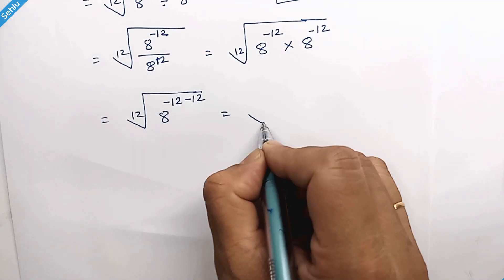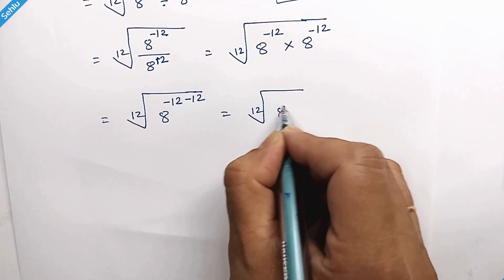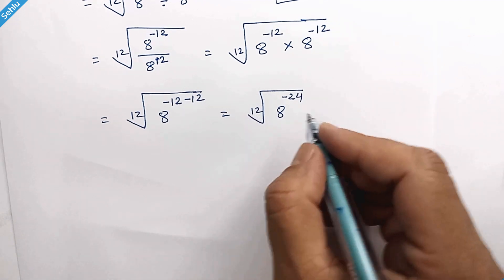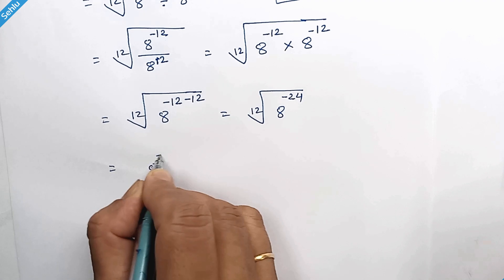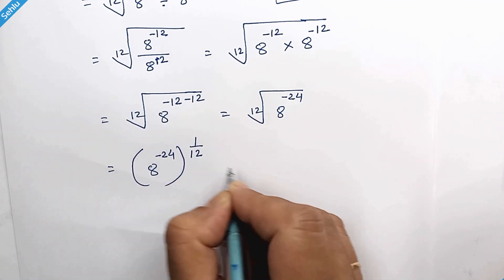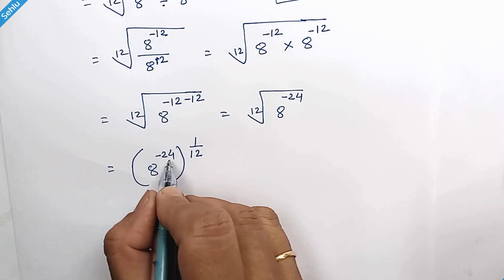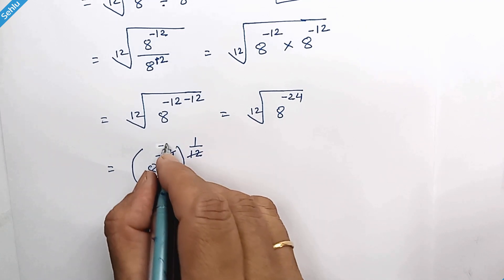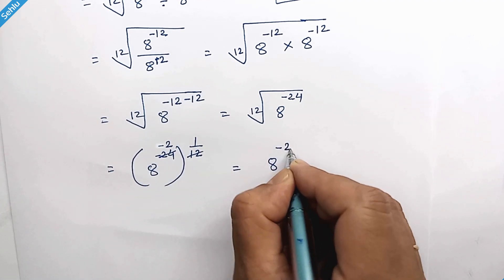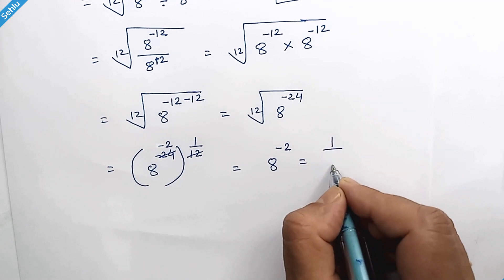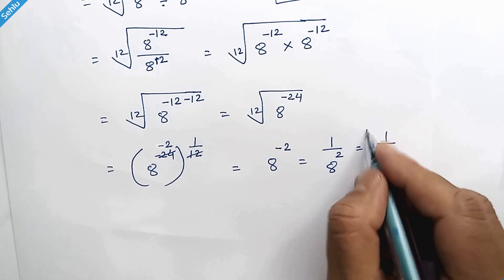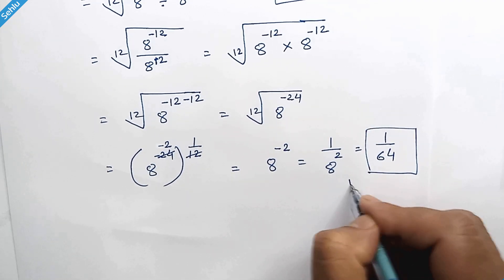We have the 12th root of 8 to the power negative 24. The 12th root can be written as an exponent of 1 over 12, and multiplying gives us 8 to the power negative 2. This can be written as 1 over 8 squared, and 8 squared is 64. So 1 over 64 is the answer.